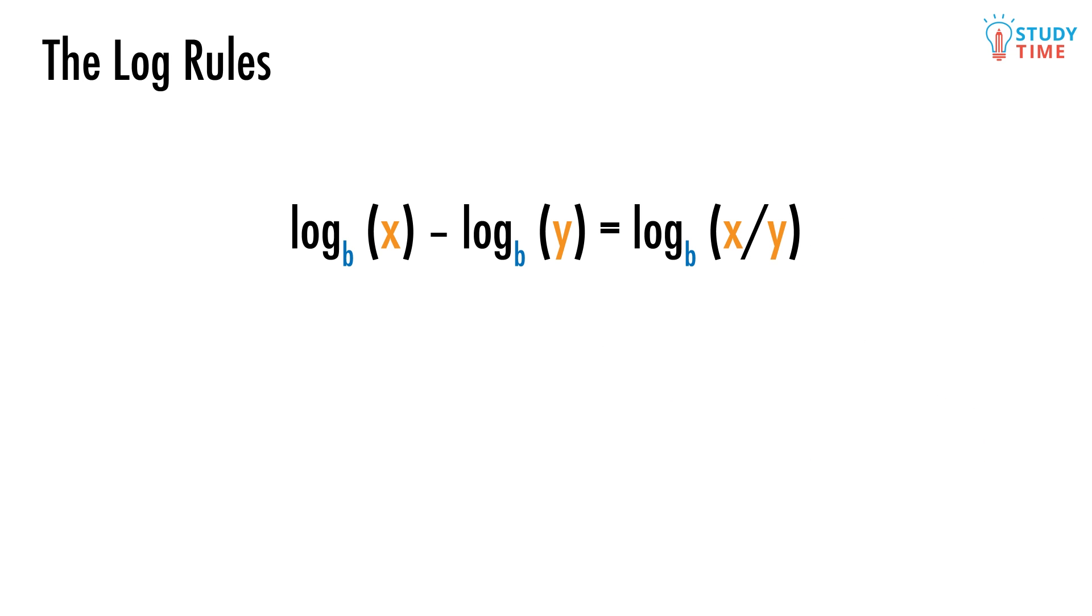Here's the second log rule. Log base b of x minus log base b of y equals log base b of x divided by y. This is really nothing more than the complete reverse situation to what we just saw with the first log rule. So hopefully it doesn't come as too much of a shock. Essentially, when two logs of the same base get subtracted, the argument of the new base will be the first argument divided by the second, the quotient of the arguments.